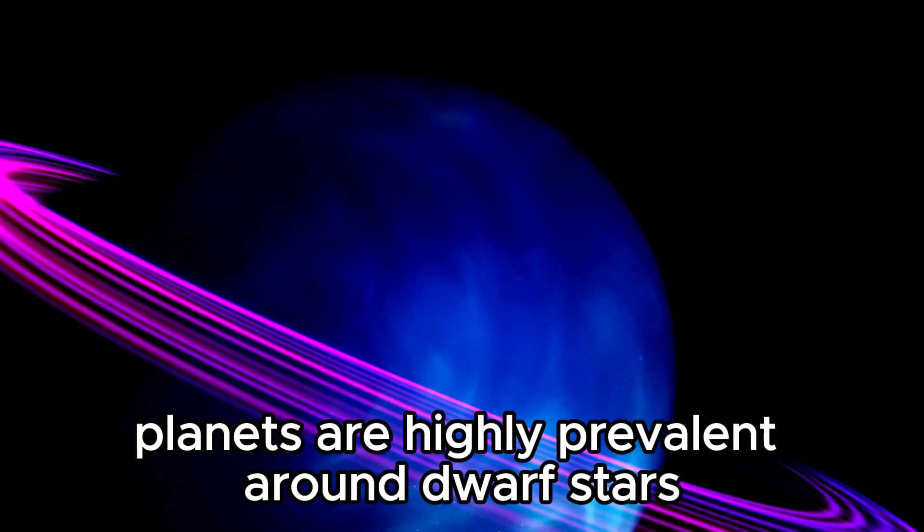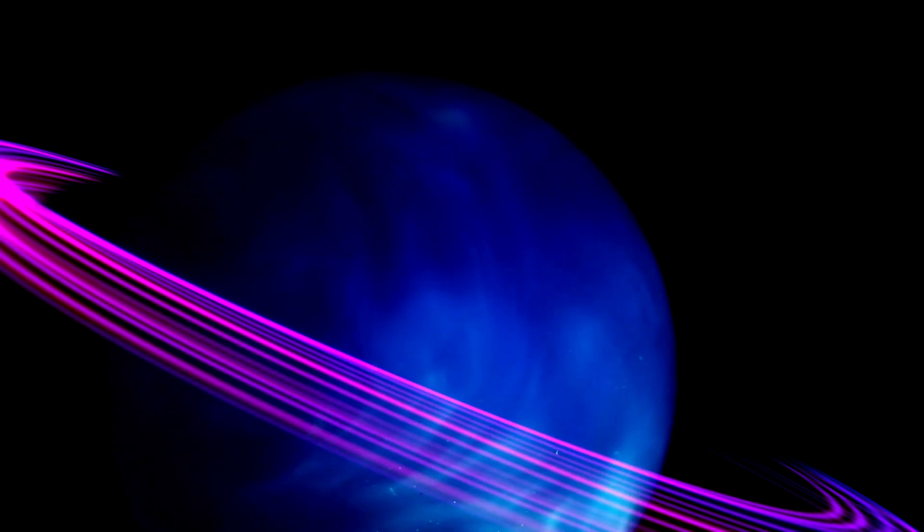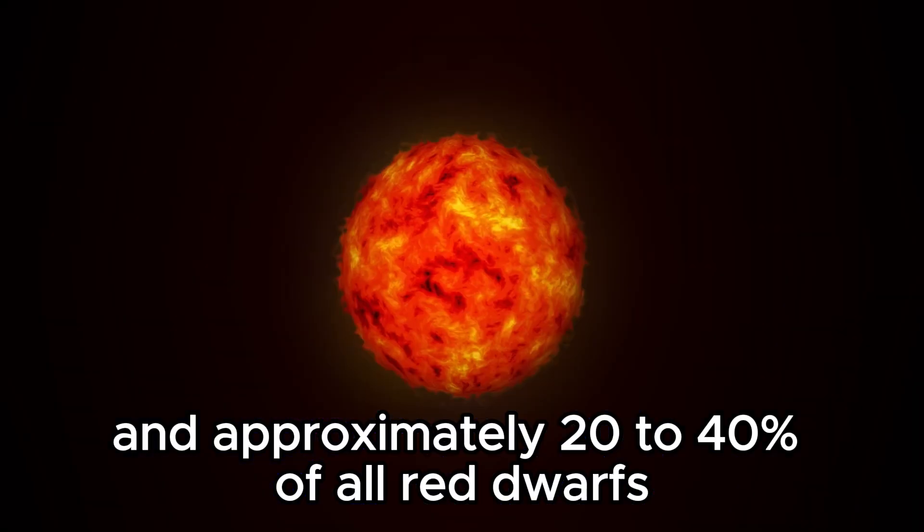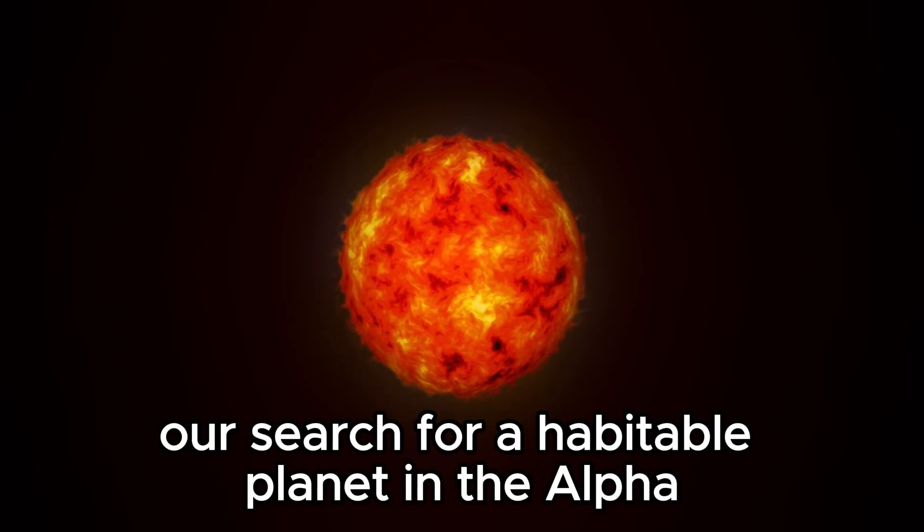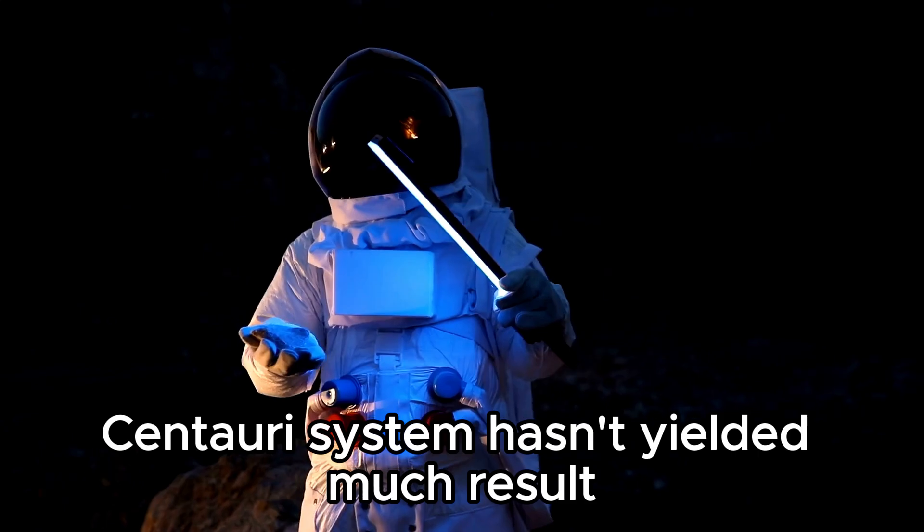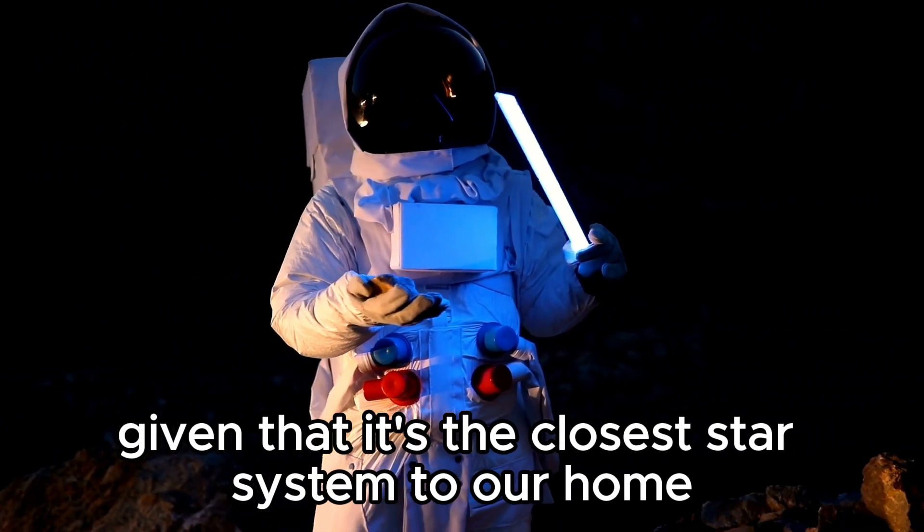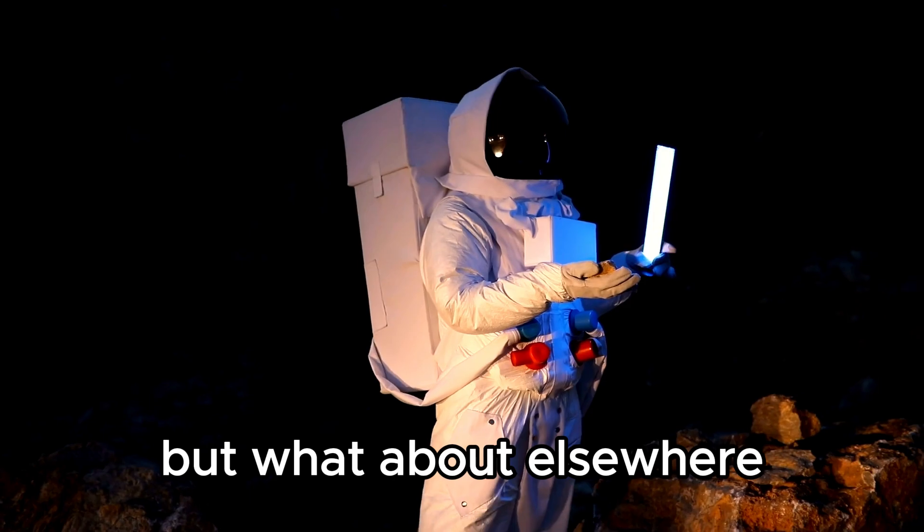planets are highly prevalent around dwarf stars, with an average of 1 to 2 planets per star and approximately 20 to 40% of all red dwarfs hosting planets in their habitable zones. Our search for a habitable planet in the Alpha Centauri system hasn't yielded much result. Given that it's the closest star system to our home, it makes sense to search here first. But what about elsewhere?